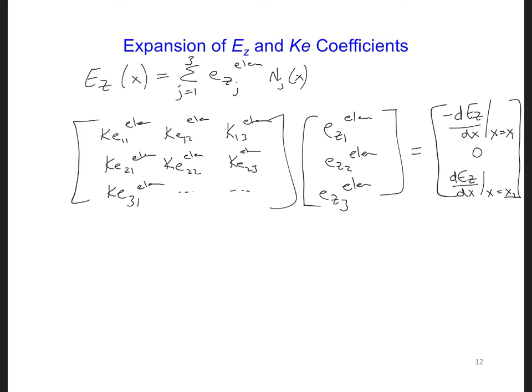So all the internal nodes will again be equal to 0. And after the global assembly, the boundary conditions will be applied to the very first and the last terms of the global right-hand side array, just like we had before for linear elements.